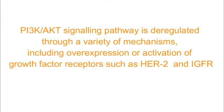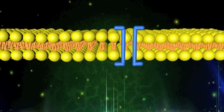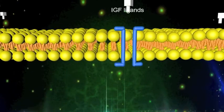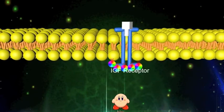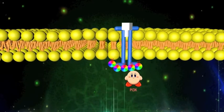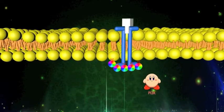The PI3K-AKT signaling pathway is deregulated through a variety of mechanisms, including over-expression or activation of growth factor receptors such as HER2 and IGFR. HER2 is the human epidermal growth factor receptor 2, and IGFR is the insulin-like growth factor receptor. IGF ligands are implicated in the development of cancer; they mediate their effects by binding to their receptor IGFR, and once activated, it can trigger the activation of the PI3K-AKT pathway.